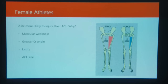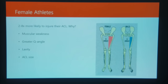Second, greater Q angle — or quadricep angle. If you draw a straight line from the hip to the kneecap, the angle that line creates is your Q angle. Because females generally have wider hips than men, they already have a greater Q angle. We talked about valgus collapse — the knee traveling medially inward — and females are already kind of set up in that valgus position. So it's much easier for their knees to travel even farther inward; they don't have as good a stack of ankle, knee, and hip on top of each other.